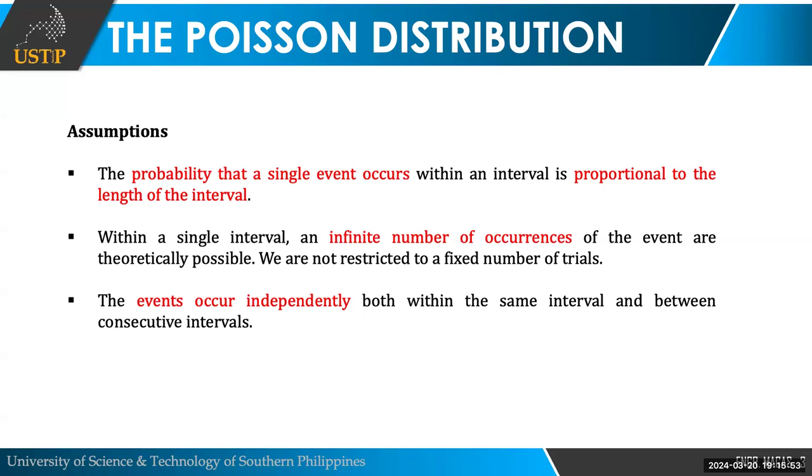And then lastly, we have the events occur independently both within the same interval, and between the consecutive intervals. What does this mean? Same interval, balik sa problem, one hour, events occur independently. It means that if one car passes by, it will not affect the probability of another car passing by. They occur independently. Also, if you add another interval, make it two hours, the cars that will pass by in the next interval will not be affected by the number of cars that passed in the first interval. That's what it means that events occur independently.